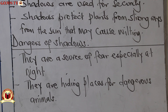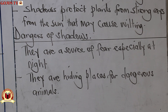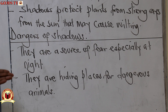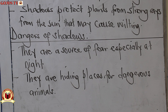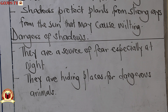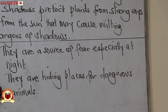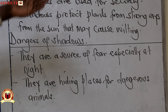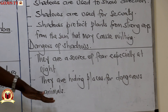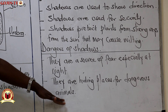Now, the dangers of shadows. How dangerous are these shadows? First, they are a source of fear, especially at night. Most of you, if left to move at night, might look at something and think it's a dog and take off. Two, they are hiding places for dangerous animals. As mentioned, shadows are used for security — bedbugs, for instance, are not helpful to humans as they suck blood from them.